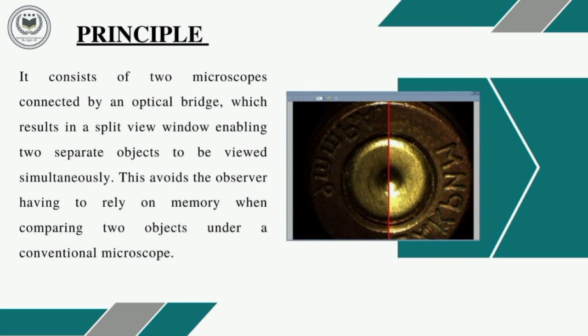The working principle behind the comparison microscope: the two microscopes are linked by an optical bridge, resulting in a split-view window. Through this two-window view, we are able to observe two different specimens simultaneously. One merit of having a comparison microscope in the lab is that the observer need not memorize anything while analyzing the similarities and dissimilarities of the first and second sample.